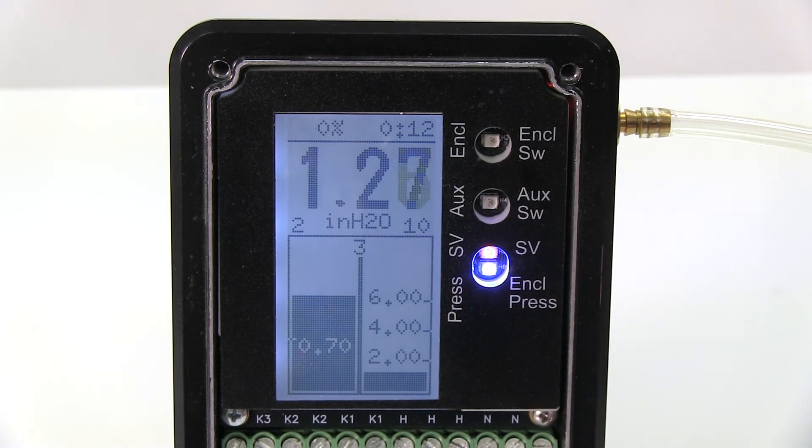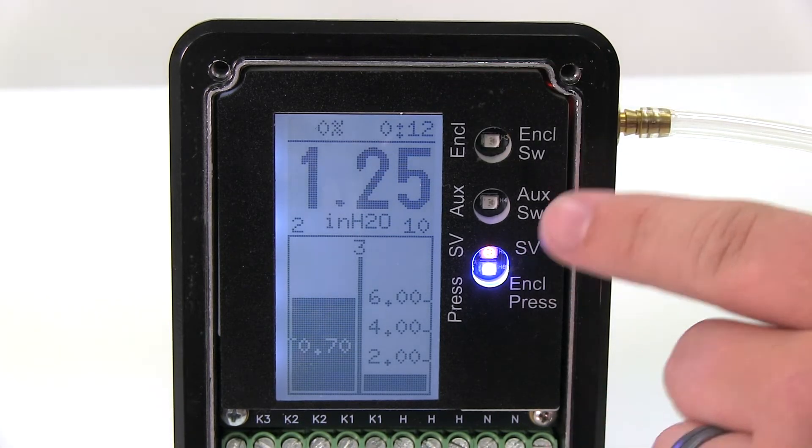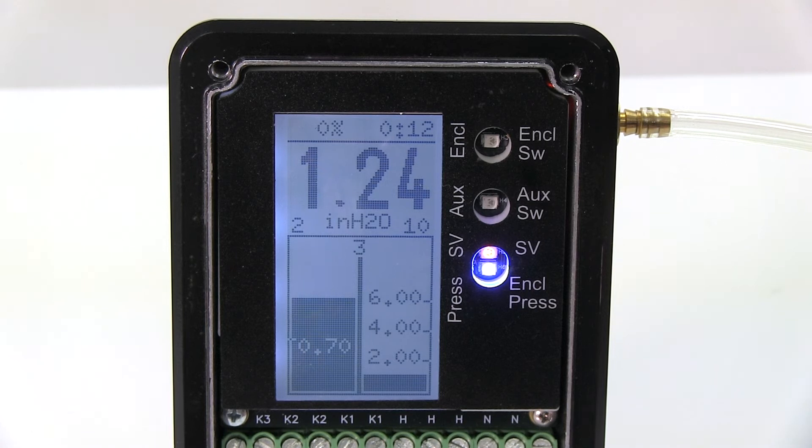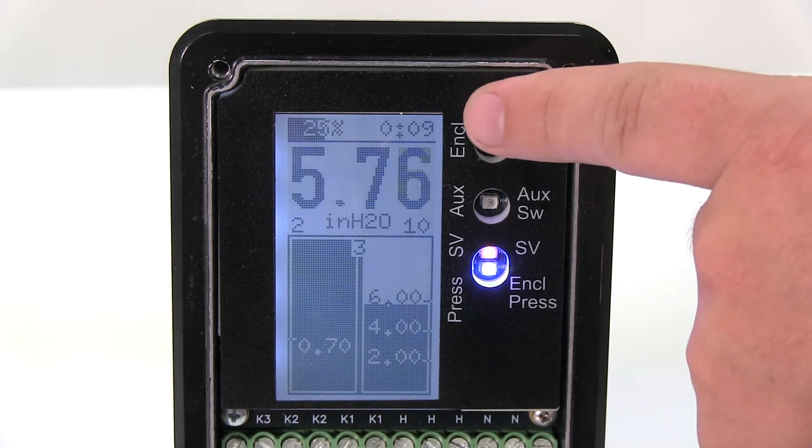But as you can tell, I'm only at 1.27, so the purging timer has not started yet. It's not going to start until I get above four inches of water. So if I increase the air a little bit, once we get above four, you can see our timer started counting down.